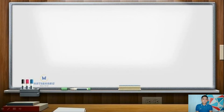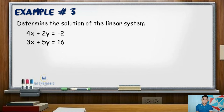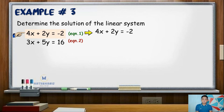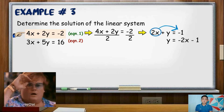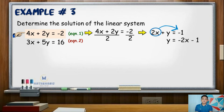For our third example, determine the solution of the linear system: 4x plus 2y equals negative 2, and 3x plus 5y equals positive 16. In this example, none of the variables have a numerical coefficient of 1. When given this type of equation, look for an equation whose numerical coefficients and constant are all divisible by a certain number. In equation 1, all coefficients and the constant are divisible by 2. Dividing by 2 gives 2x plus y equals negative 1. The equation can now be rewritten in terms of y: transpose 2x to the right side, giving y equals negative 2x minus 1. Next, substitute the value of y into equation 2.